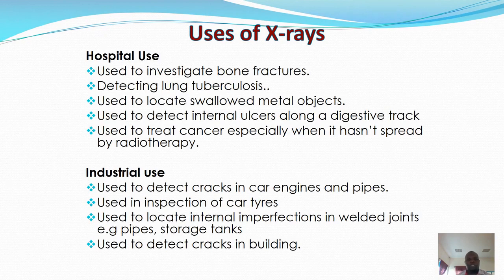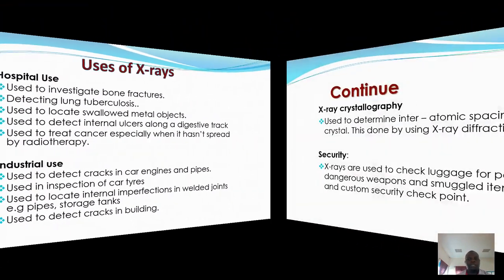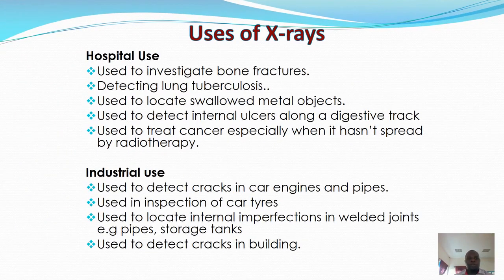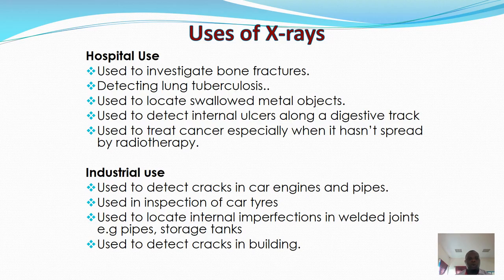X-rays have different categories of use, including hospital use, industrial use, X-ray crystallography, and security. Under hospital use, X-rays are used to investigate bone fractures, detect lung tuberculosis, locate swallowed metal objects, detect internal ulcers along the digestive tract, investigate warding joints, and detect internal conditions.